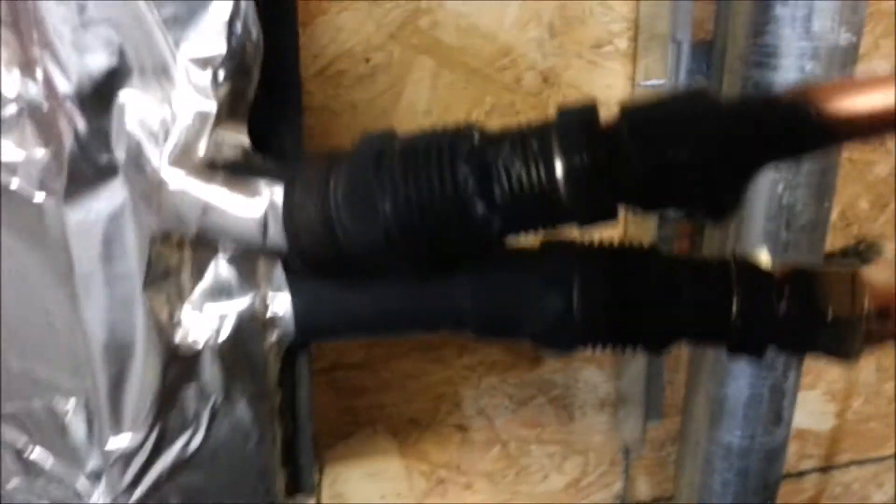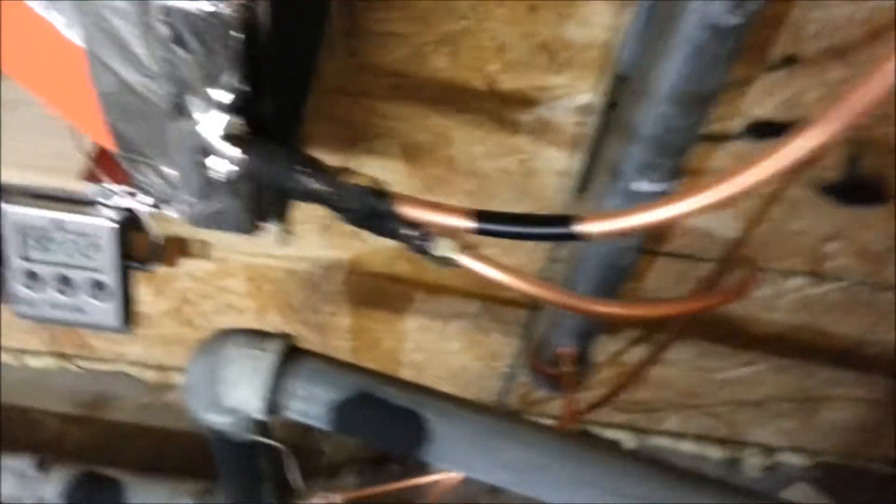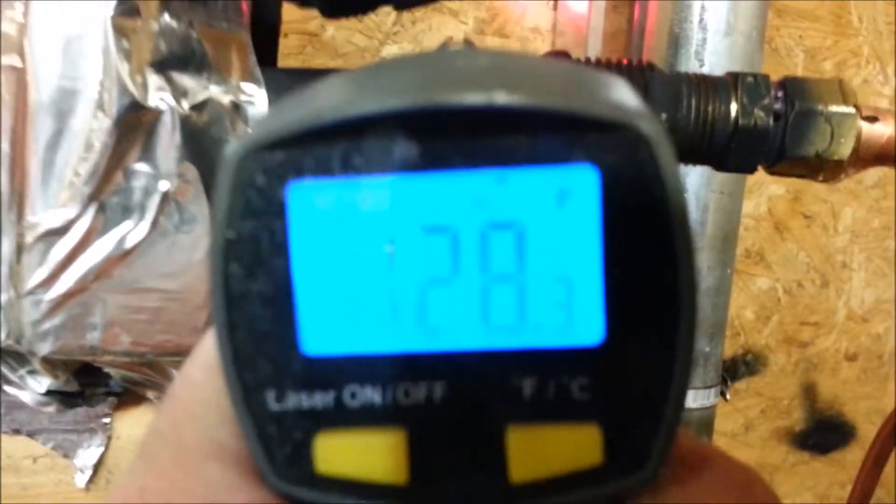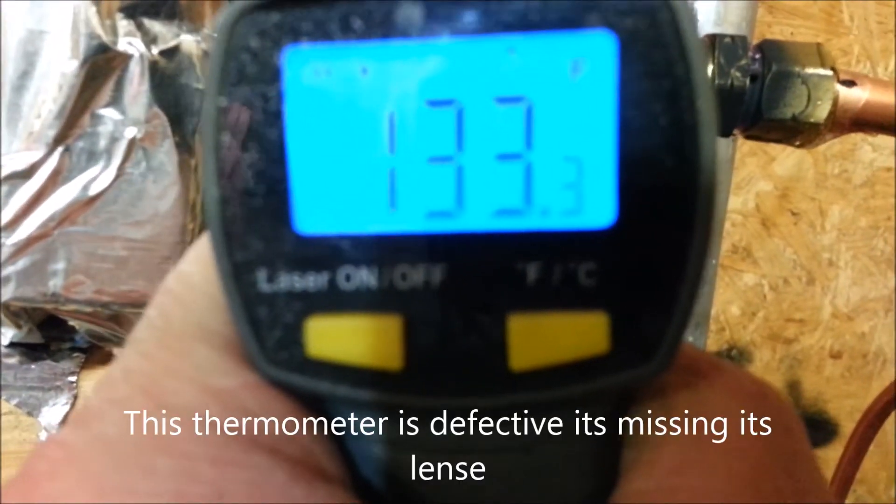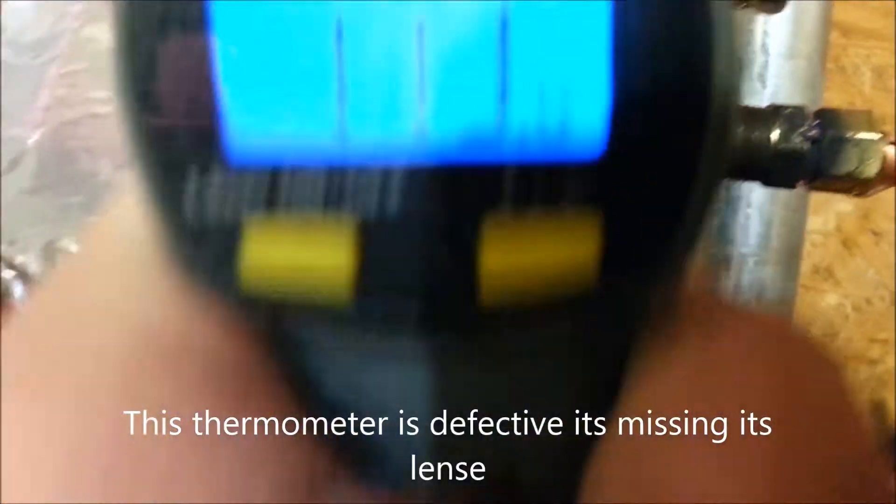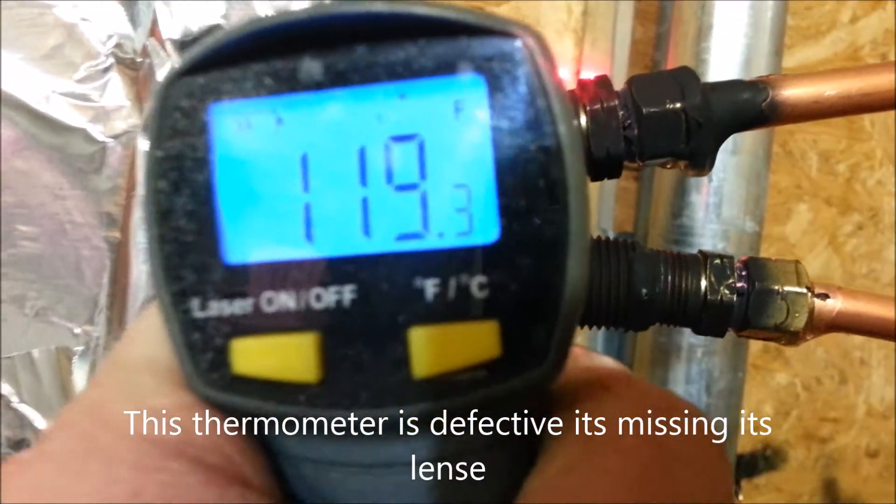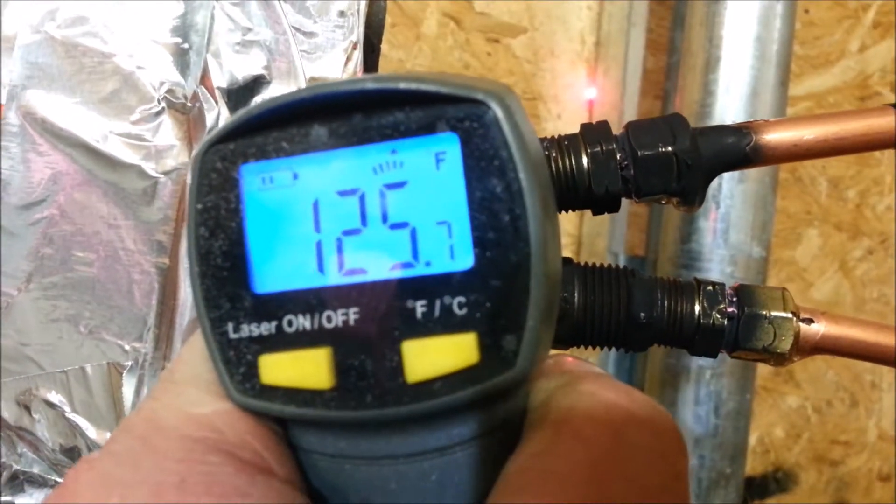So we're going to check the temperature difference on the heater for now. See what the intake reads. It's saying that it's arriving at 130. 136 in and 126 out. So you're getting 10 degrees of thermal energy removed from the fluid.